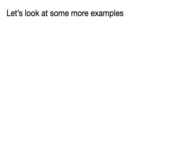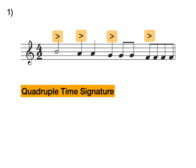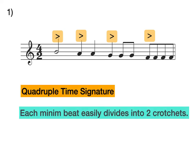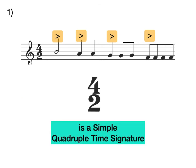Let's have a look at some more examples. How many strong beats are in this bar? That's correct, there are four strong beats, making it a quadruple time signature. And each minim in this bar easily divides into two crotchets, meaning that this 4/2 time signature is a simple quadruple time signature.